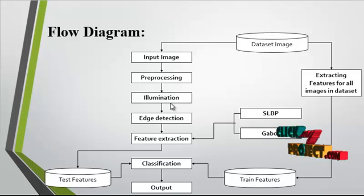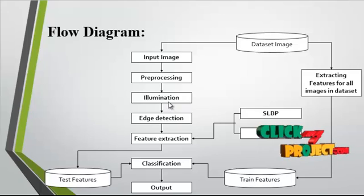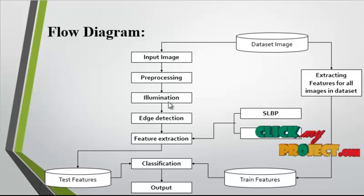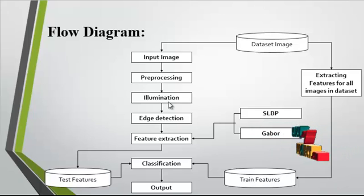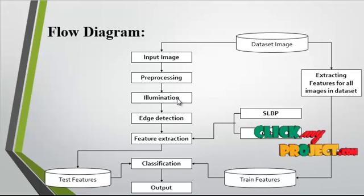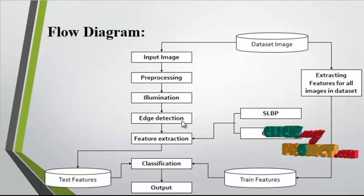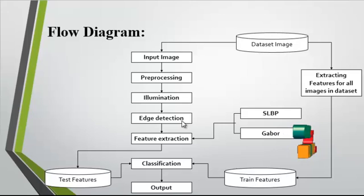After pre-processing, the pre-processed image is used for illumination. Illumination is used to eliminate the background and extract the required object from the separated background. Color contrast is applied in this illumination step. Then edge detection is carried out.